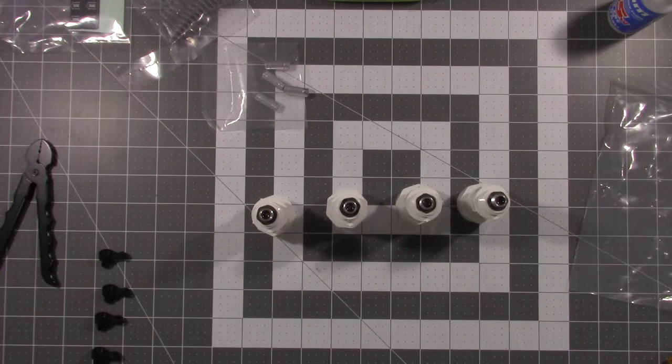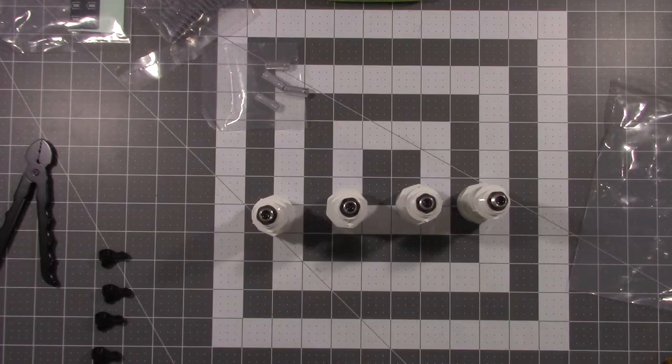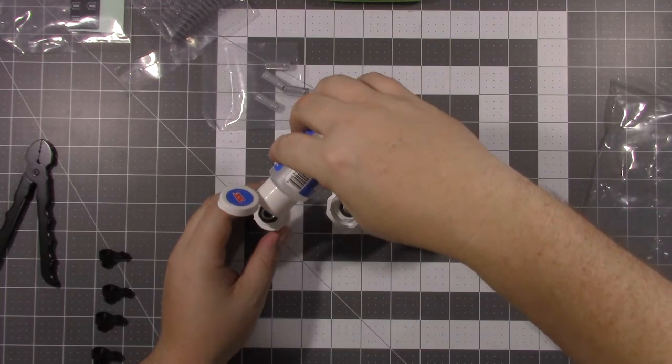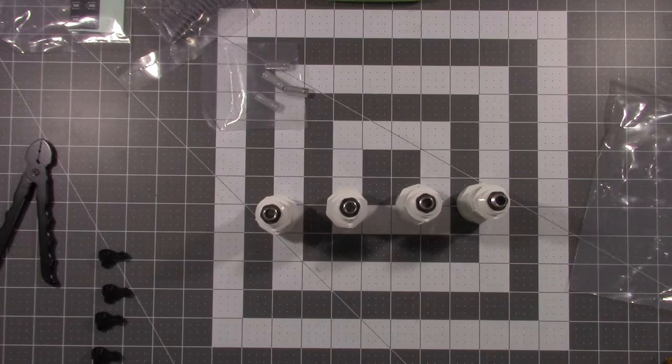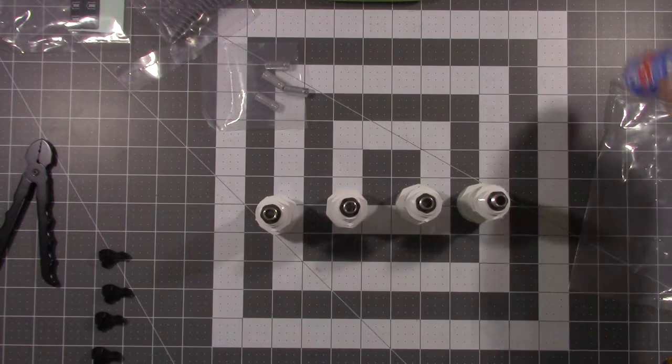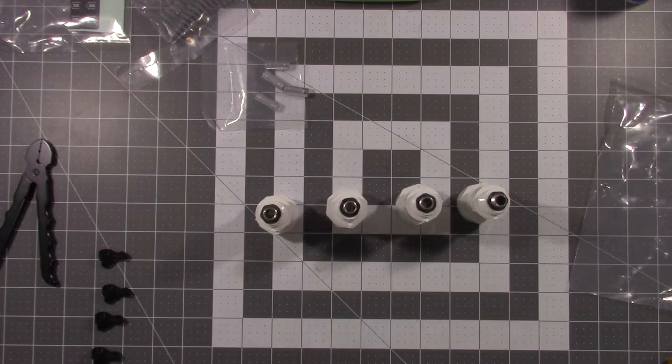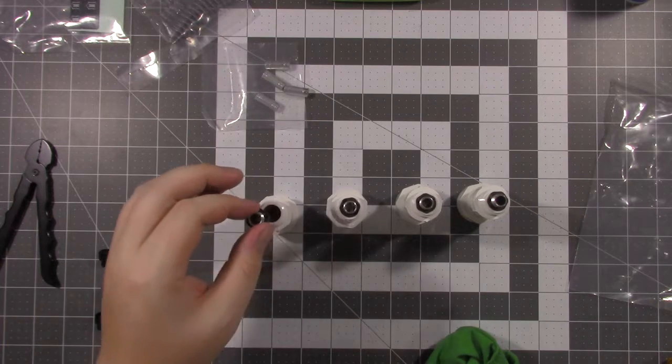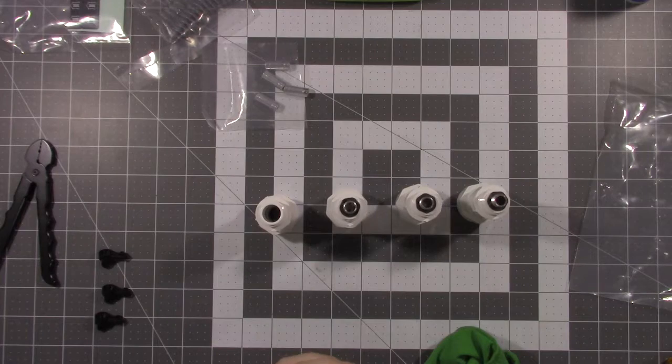All right guys, we've got the shocks put together, all filled with oil, got all the air out of them. Now I'm going to go ahead and top them all off, then we'll put the shock caps on. Now for this part you definitely want to have a rag in here by because you're going to make a little bit of a mess when you start putting these shock caps on. It's going to push some of the oil out.